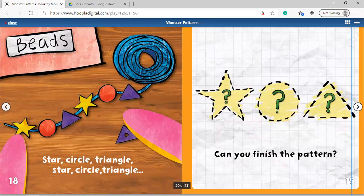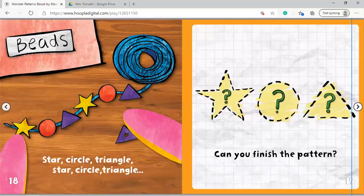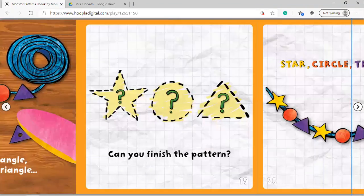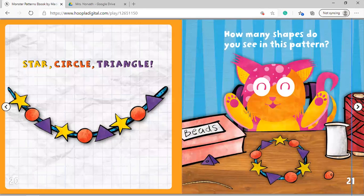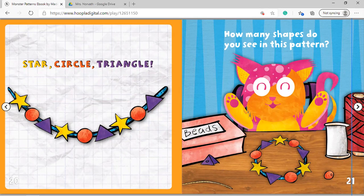Star, circle, triangle, star, circle, triangle. Can you finish the pattern? Star, circle, triangle, how many shapes do you see in this pattern?